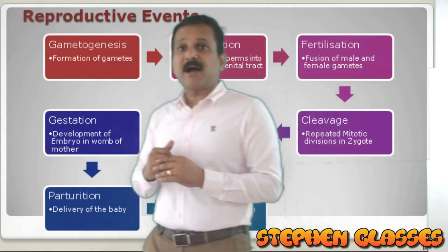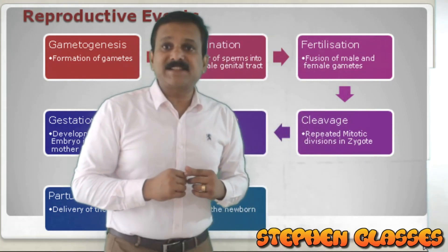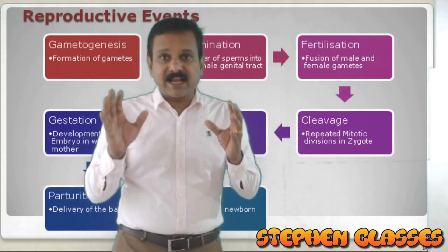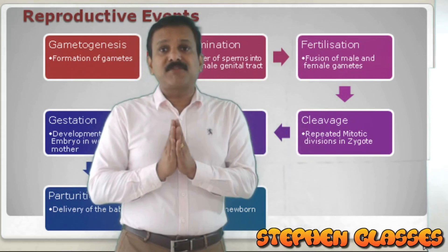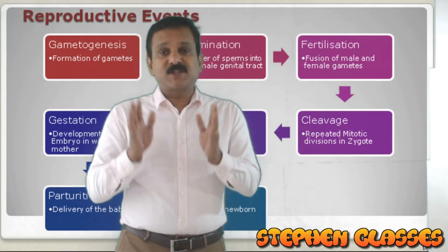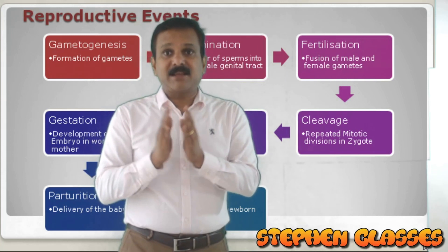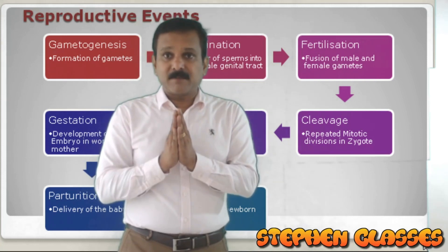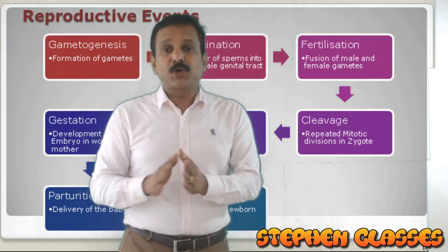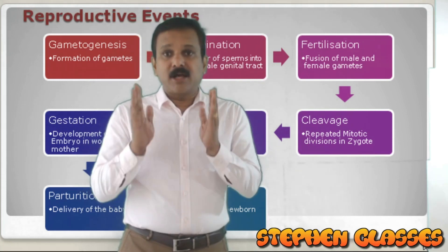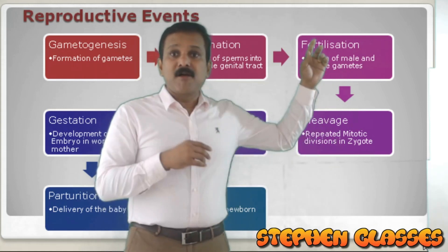After insemination there will be fertilization. What is fertilization? The fusion of the male gamete and the female gamete. This will happen in the fallopian tube of the mother. By insemination, the male gamete has already reached inside the female, and inside the female there will be fusion of the two gametes — that is called fertilization.